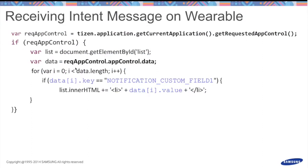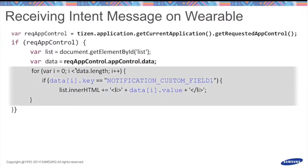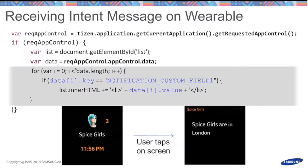On the receiver side — the wearable side — you use app control to find the intent you received. In the highlighted code you iterate through all key-value pairs to locate your custom data and display it on screen. When the user receives the intent, they tap the screen and see all the details.